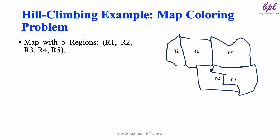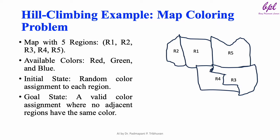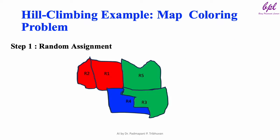We have a map with five regions: R1, R2, R3, R4, R5. There are three available colors: red, green, and blue. Initially, we will have a random color assignment to each region. Our goal state is a valid color assignment where no adjacent regions have the same color. Now let's see the steps to solve this problem using hill climbing.